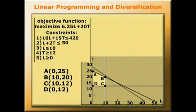We're simply finding the solution of two linear equations. We've got L plus 2T is equal to or less than 50, and we've got that L is equal to or less than 10.